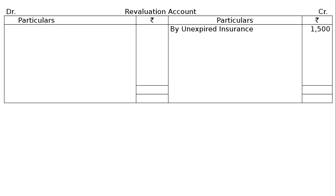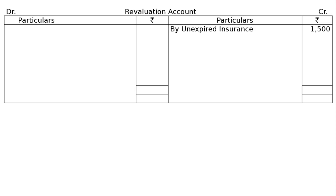Unexpired insurance 1,500 goes to credit side of revaluation. Part B: provision for doubtful debts be brought up to 5% of debtors. Debtors are 10,000, so 5% is 500. Existing provision is 200, so provision increases by 300.